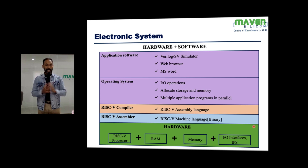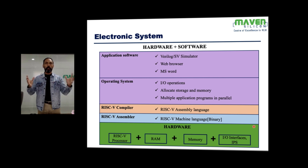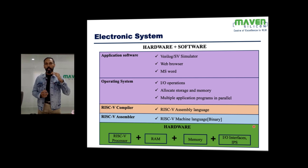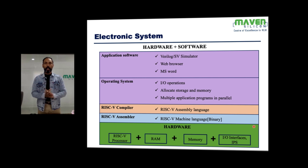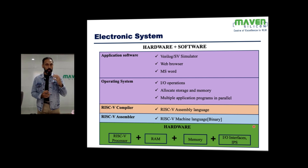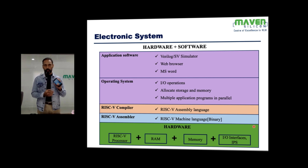We create hardware using a complex System on Chip. This SoC will have almost all the components needed for the electronic system, and the processor is going to be the main component. Whatever applications we run, all the applications will be converted into processor instructions, and eventually all the instructions will be executed by the processor — that's how the processor initiates and does all kinds of operations.